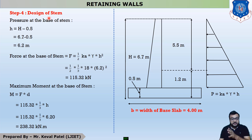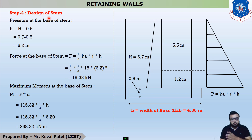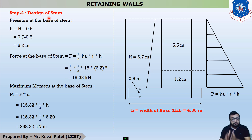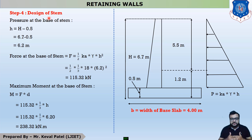One common method for steps four, five, and six is that we first find out the force by calculating the area of the pressure diagram. After finding the force, we find the moment. After the moment, we find Pt, Ast, spacing, spacing provided, and finally Ast provided. This is the common procedure for steps four, five, and six.